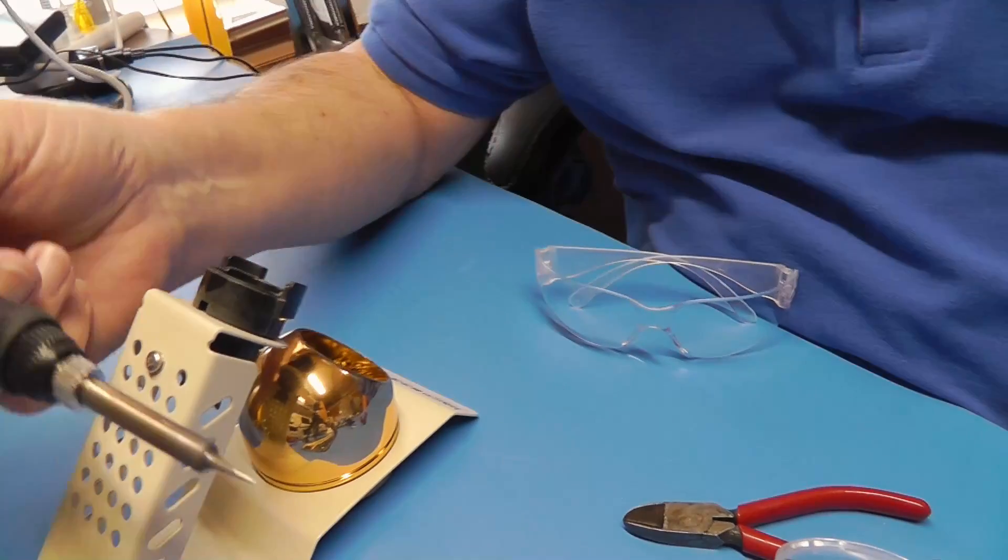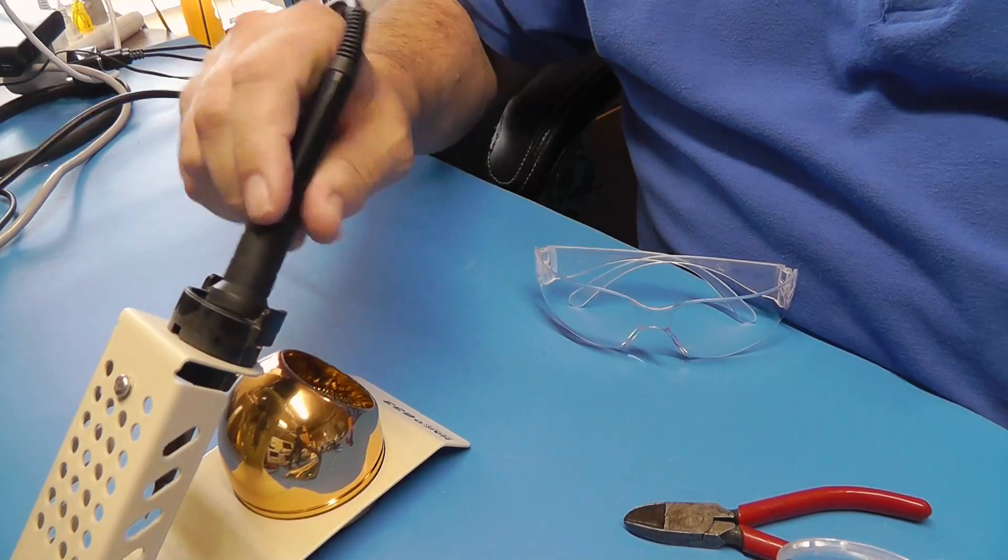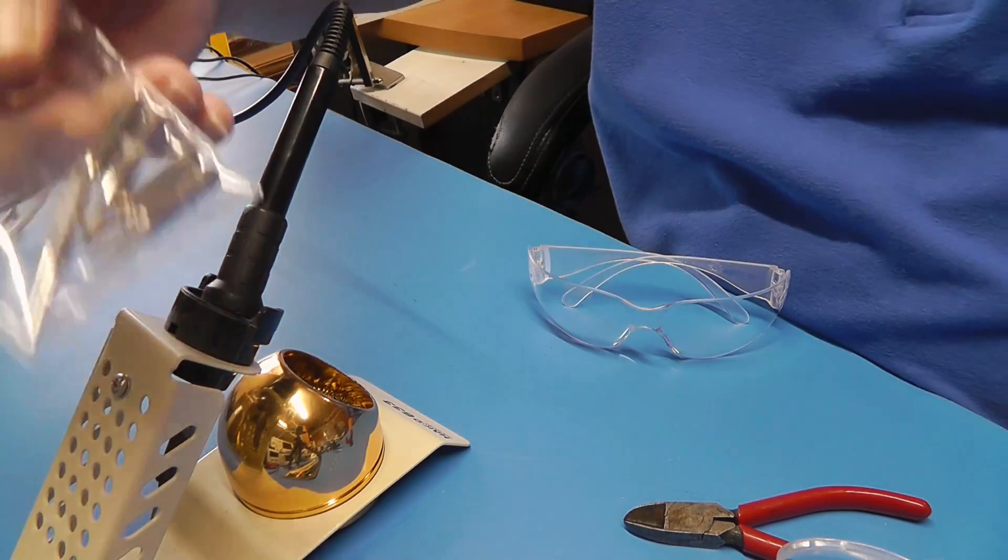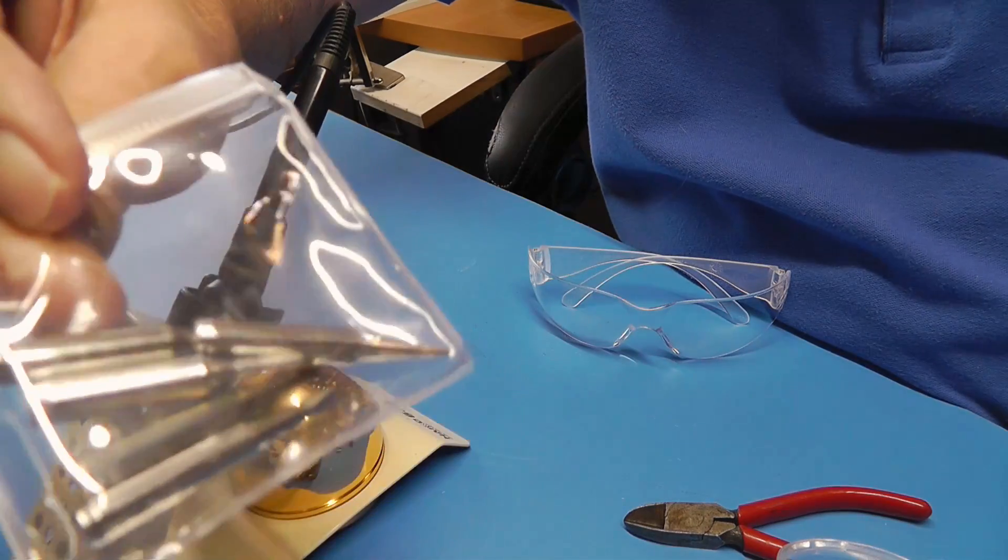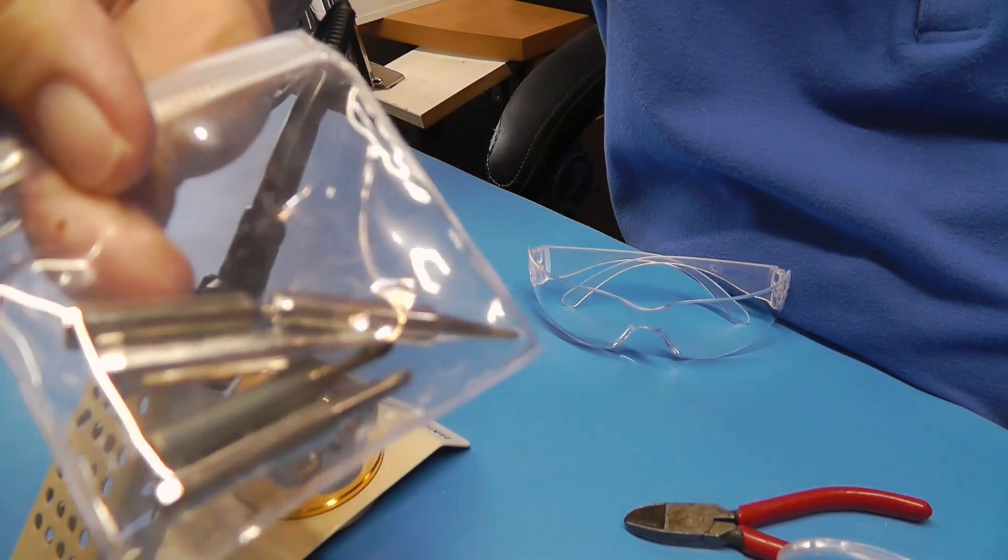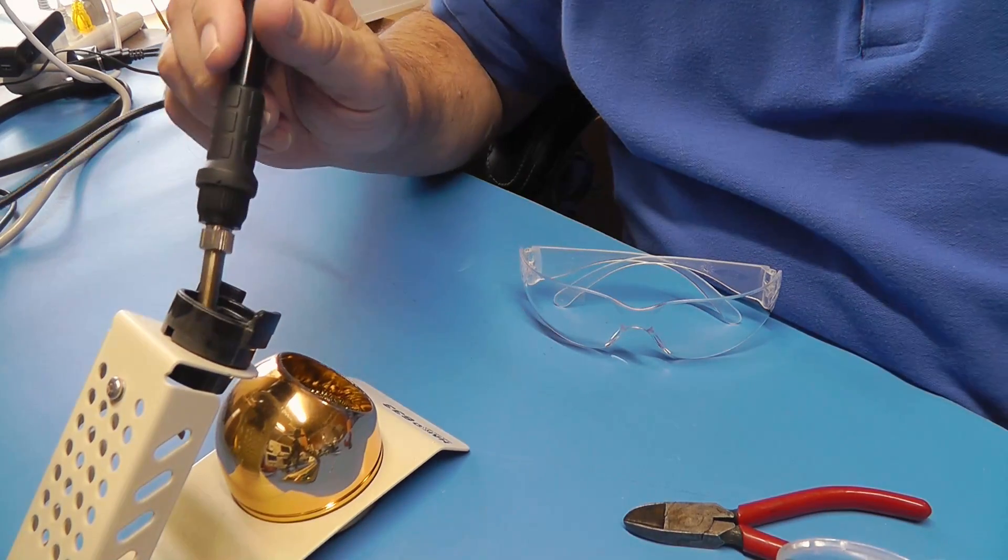And this is the soldering iron right here. And I've got a real fine tip on it. The thing comes with several different tips. Depending on what you're trying to solder, you may want to use a tip that holds more heat. In this case, we're just soldering a simple little wire and it's not that big a deal.